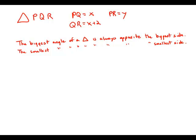Something a bit curious about this prompt — they've given us variable expressions about the sides, and they want to know what is the biggest angle. Here we have to remember this tremendously important fact about triangles: the biggest angle of a triangle is always opposite the biggest side. The smallest angle is always opposite the smallest side. So if we can figure out the biggest side, we would know the biggest angle.